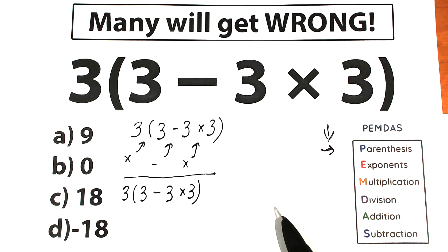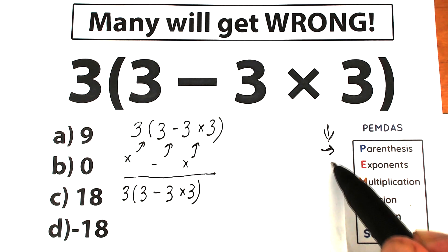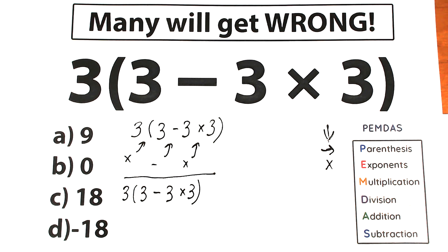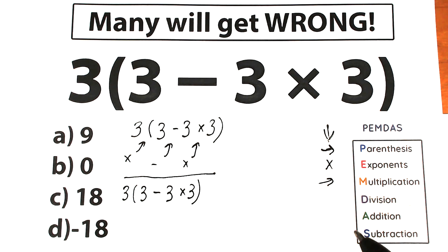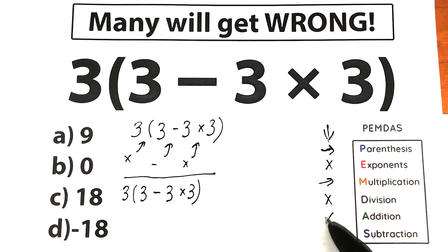Next is exponents — I don't see any exponents, so we skip this part. For example, 3 cubed or 3 squared would be exponents, but we don't have any here. Next is multiplication — we have multiplication inside the parenthesis, so this is our second step. We don't have any division, so we skip that. We also have no addition, so we skip that too. We do have subtraction inside the parenthesis.